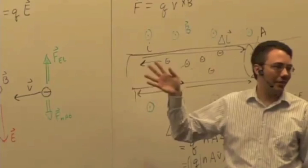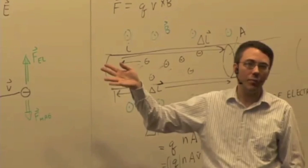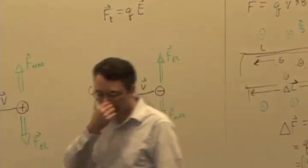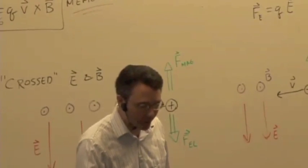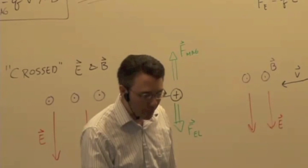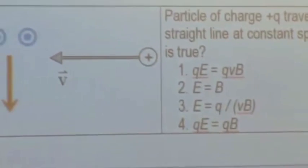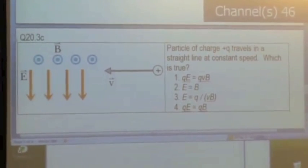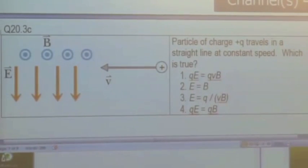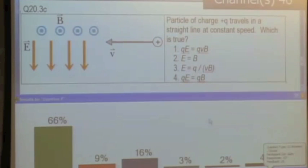If we could arrange things so the forces were equal to each other, what would happen to the charge? It would just move in a straight line — the net force on it would be zero. Newton's second law tells us if the net force is zero, the momentum and therefore the velocity won't change — no acceleration, just constant velocity. So for a charge Q traveling in a straight line at a constant speed, QE must equal QVB.